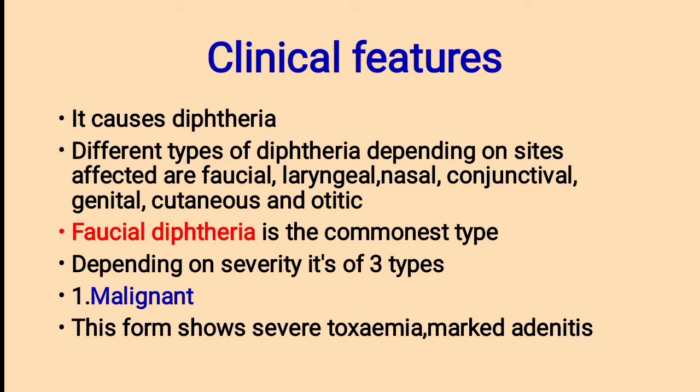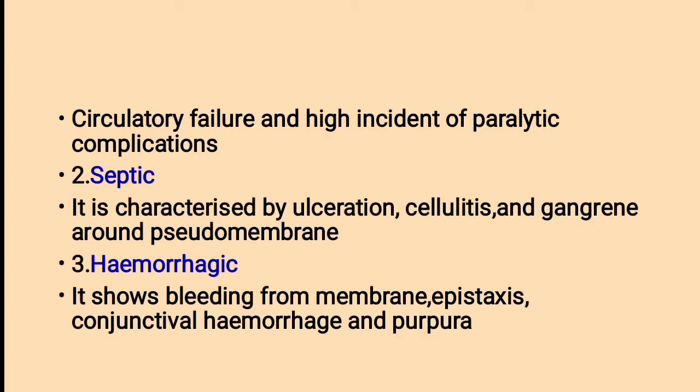Faucial diphtheria is the most common type. Depending on severity it is of three types. First, malignant diphtheria, which shows severe toxemia and marked adenitis — inflammation of a gland, usually lymphadenitis — along with circulatory failure and high incidence of paralytic complications. Second, septic, characterized by ulceration, cellulitis, and gangrene around the pseudomembrane. Third, hemorrhagic, showing bleeding from membrane, epistaxis (bleeding from nose), conjunctival hemorrhage, and purpura.